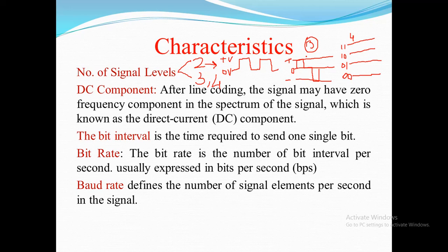The next important factor is the DC component, which is not desirable and not acceptable in a signal because it causes distortion. When we perform line coding and the digital signal is transmitted through communication media, the signal may have a zero frequency component, which is called the DC component. Its drawback is that it cannot pass through some components like transformers and capacitors, which block it, causing signal distortion.